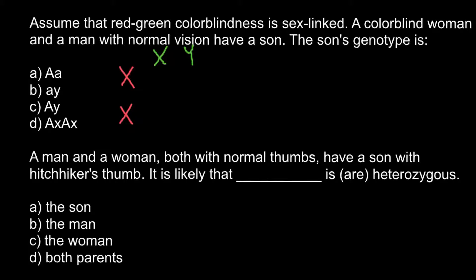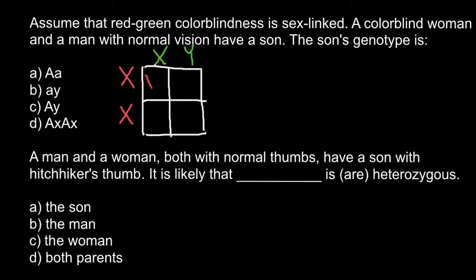Now we build a Punnett square and predict the genotypes of the progeny. The defective X chromosome and normal X chromosome from the father's side, the defective X chromosome and normal Y chromosome from the father's side — giving us all four possible offspring combinations.